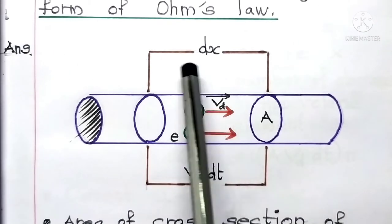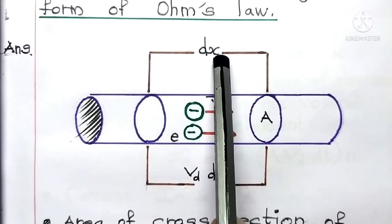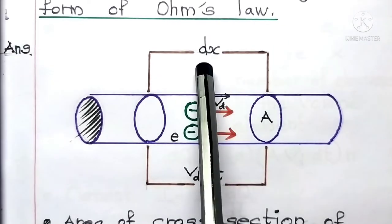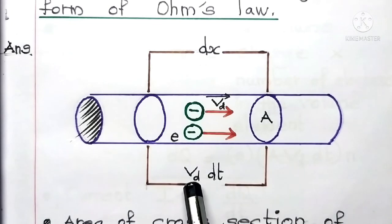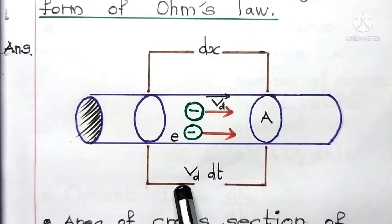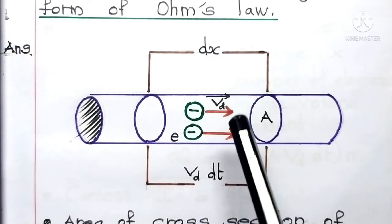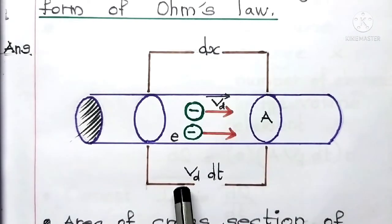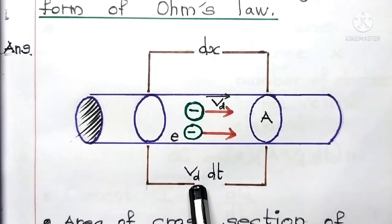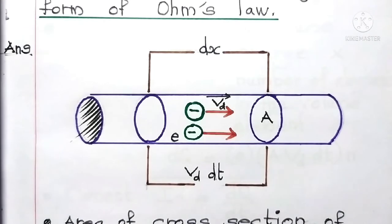This small length dx is nothing but Vd into dt, because velocity is equal to distance by time — in other words, velocity is equal to length by time. Therefore, length is equal to velocity into time, so dx = Vd · dt. That's all about this diagram.